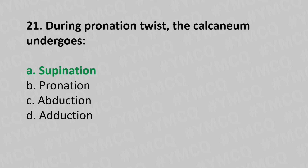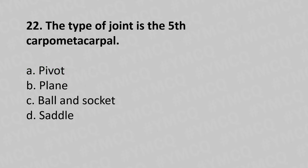Twenty-second question: the fifth carpometacarpal joint — what type of joint is it? Option A: pivot joint, option B: plane joint, option C: ball and socket joint, option D: saddle joint. The answer is option D: saddle joint.